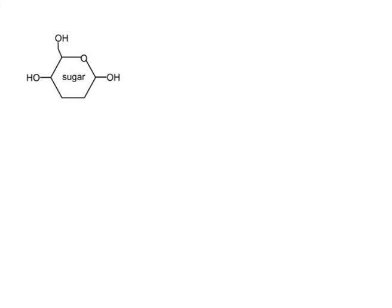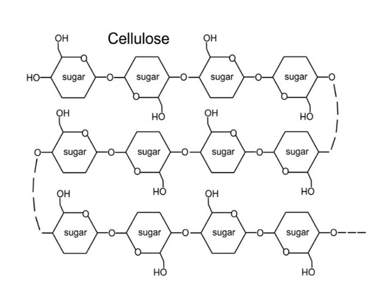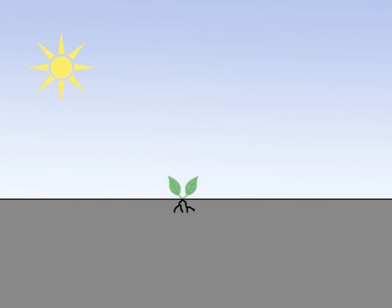The sugar molecules can be joined together into long chains, called cellulose. Cellulose is the building material plants use to grow bigger.